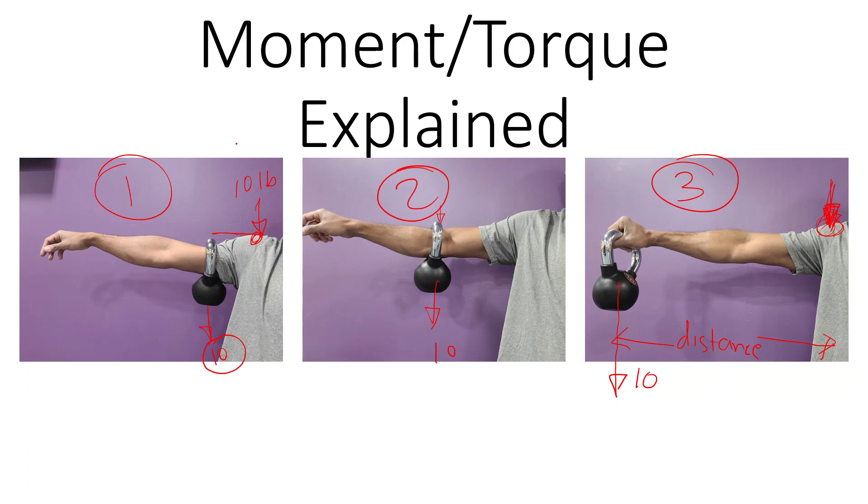So what I'm actually feeling in my shoulder is the force in my hand times this distance. So it's the multiplication of force times distance. So moment, what I'm feeling in my shoulder, is actually force times distance, whatever I'm carrying. And this is the piece it's called moment or torque depending on the situation.